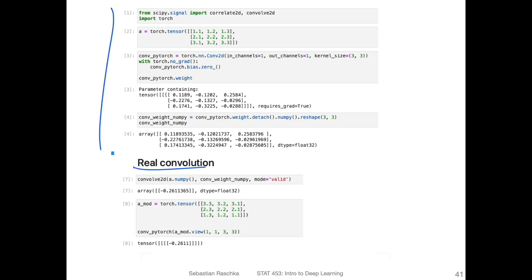If we look at the real convolution, if we use the convolution implemented in scipy, you can see what we would get is minus 0.26. And if I want to get that result in PyTorch, what I would have to do is rearrange the weights or the input. Here, I'm creating the matrix backward. I'm just putting in a different order, and then I also get the same result as with this convolution.